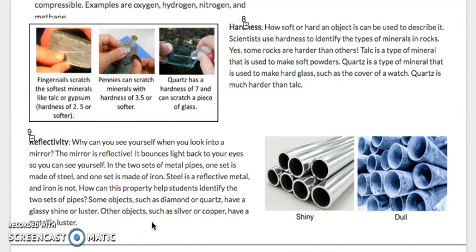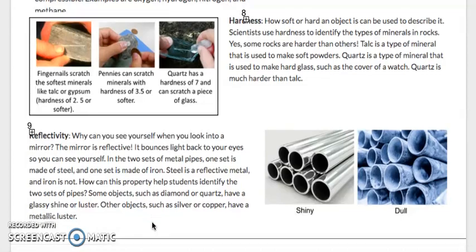Why can you see yourself when you look into a mirror? The mirror is reflective. It bounces light back into your eyes, so you can see yourself. In the two sets of pipes, one set is made of steel and one set is made of iron. Steel is a reflective metal and iron is not. How can this property help students identify two sets of pipes? Some objects, such as diamond or quartz, have a glassy shine or luster. Other objects, such as silver or copper, have metallic luster.